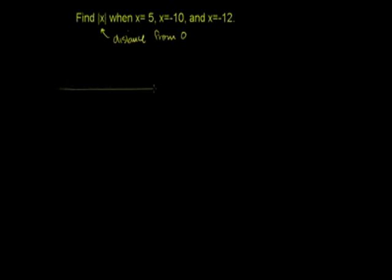So let me just draw a fast number line over here. Let's just put 0 right over here, since we're thinking about the distance from 0. So let's just think about the absolute value of x when x is equal to 5. So that's equivalent to the absolute value of 5. We just substituted 5 for x.